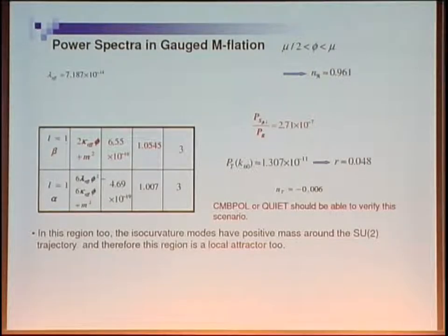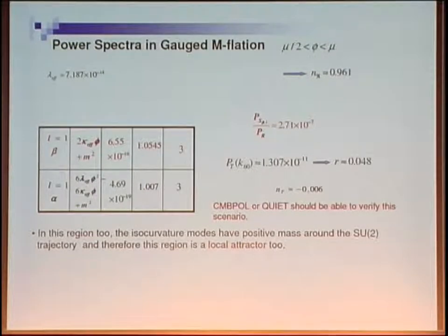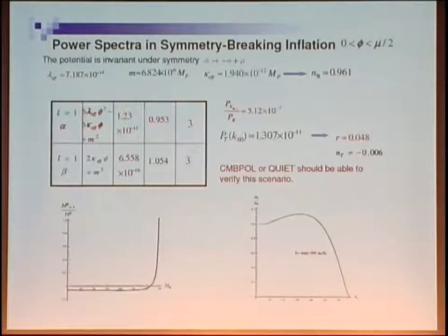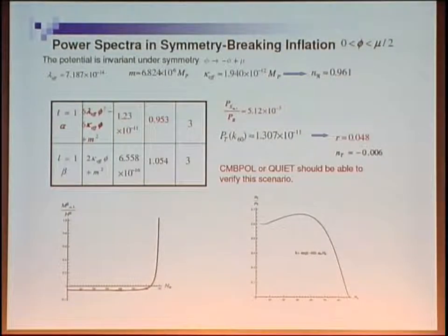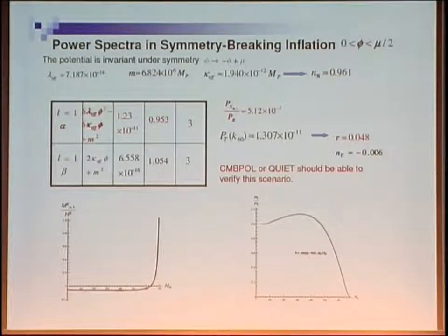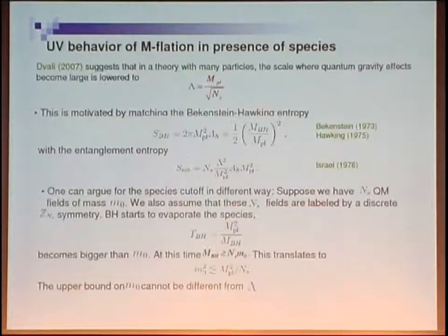For the region between mu/2 and mu, the same analysis is valid. The amplitude of isocurvature perturbations is smaller, and tensor perturbations will be about 5%. In both cases, the masses are positive, showing that the SU(2) sector is a local attractor. In the case that phi is between 0 and mu/2, one of the masses can become negative during part of its evolution, leading to a larger amplitude for isocurvature perturbations.